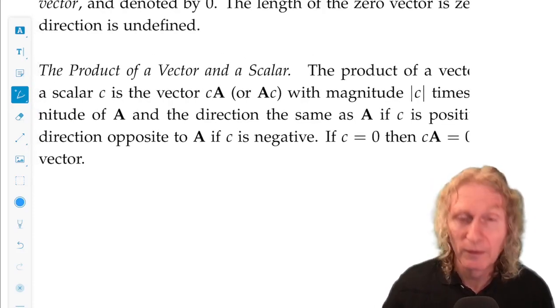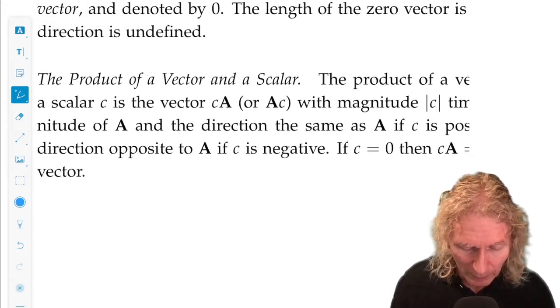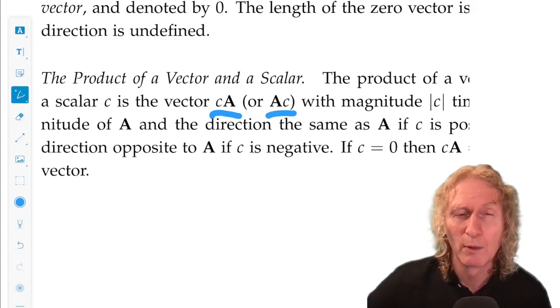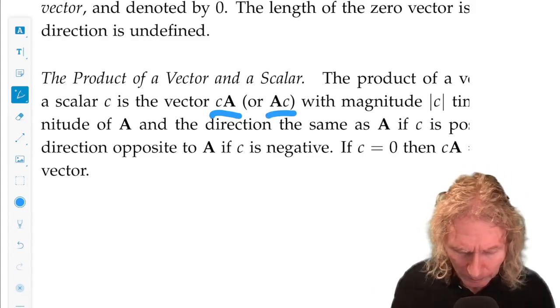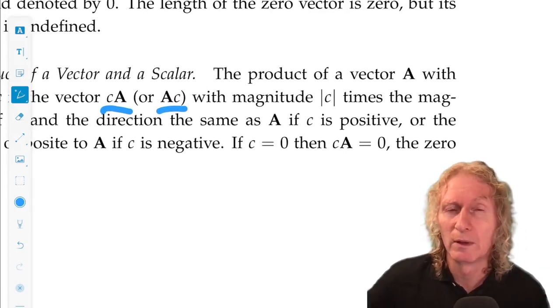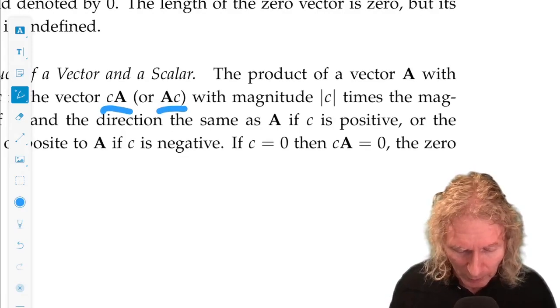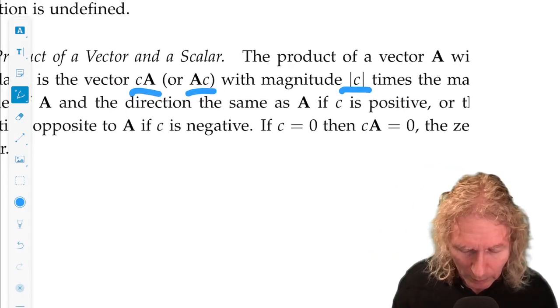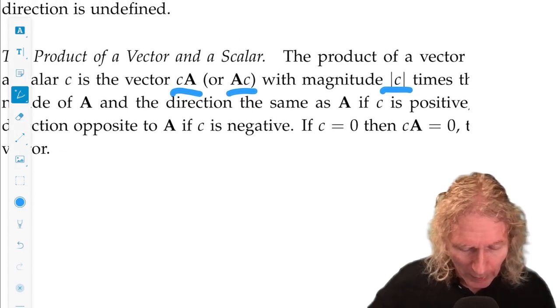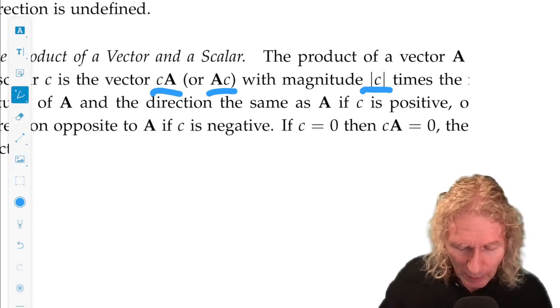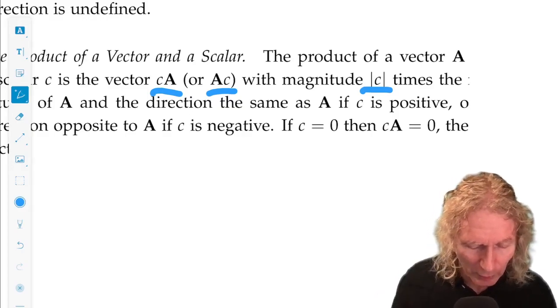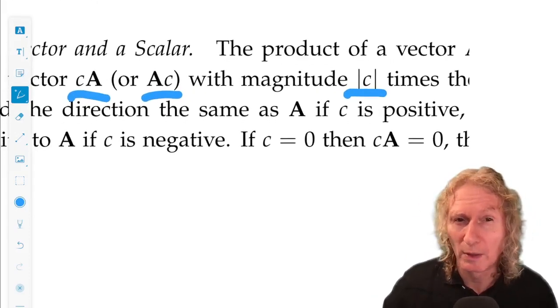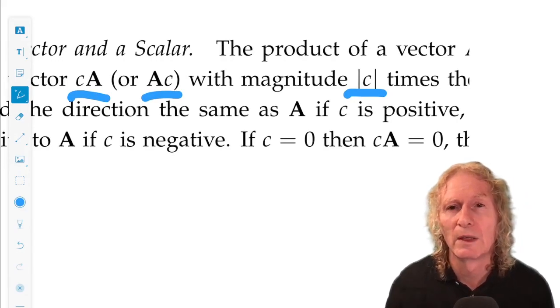Now the product of a vector in a scalar, C, we'll call a scalar C. Take a vector A. We denote the product by C times A or sometimes people call it AC. I usually almost always use scalar on the left, vector on the right. And there's a number, positive or negative. We need to look at its absolute value. And C times A is the vector with magnitude of A multiplied by the magnitude of C, in the same direction of A if C is positive. And it's in the opposite direction if C is negative, but its magnitude is magnitude C times magnitude A. And if C is zero, then C times A equals zero.